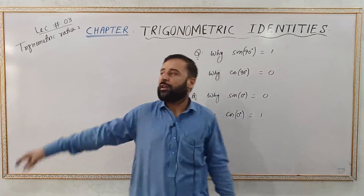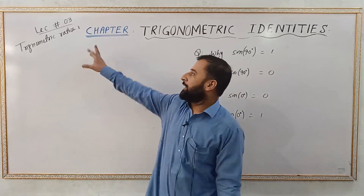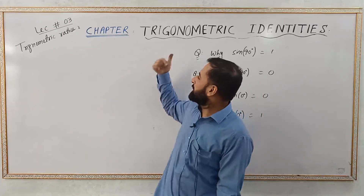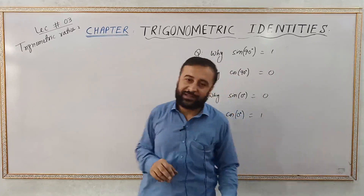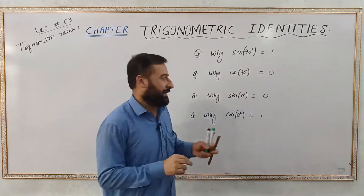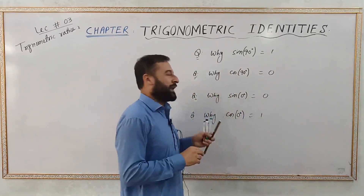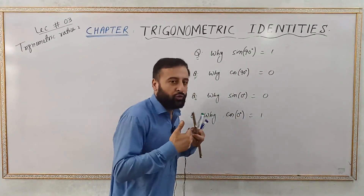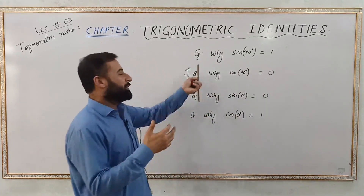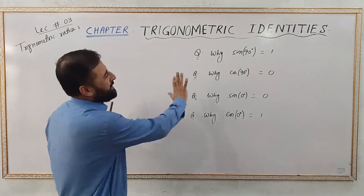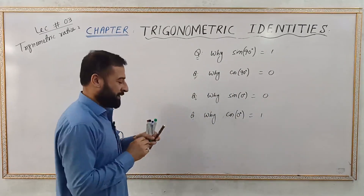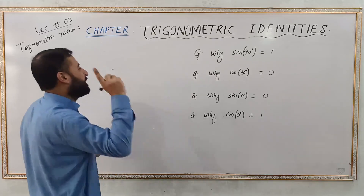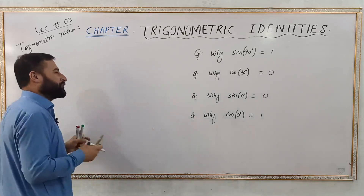I have covered this in lecture number 1 and lecture number 2 of these lectures. So let's discuss why sine of 90 equals 1. I will try to go through these questions quickly and just answer these 4 questions. It is very simple.